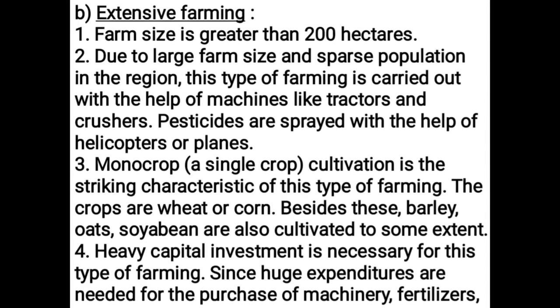Extensive farming: Farm size is greater than 200 hectares. Due to large farm size, this farming is carried out with machines like tractors and crushers. Pesticides are sprayed with the help of helicopters or planes. Monocrop — single crop cultivation — is the striking characteristic. The main crops are wheat or corn; barley, oats, and soybeans are also cultivated to some extent.